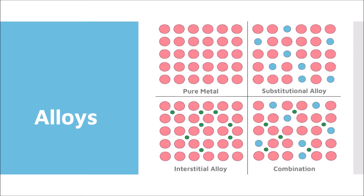You can also have alloys that are a combination of substitutional and interstitial alloys. In this example, the blue atoms are substitutional — they have replaced one of the original atoms — and the green atoms are interstitial, inserted into the gaps. The size of the atom helps determine what type of alloy will form. In a substitutional alloy, the original and substituted atoms tend to be fairly close in size. In an interstitial alloy, the original atom tends to be much larger than the atom inserted into the gaps.